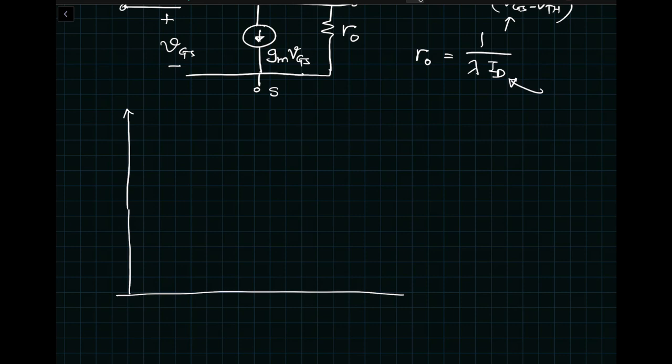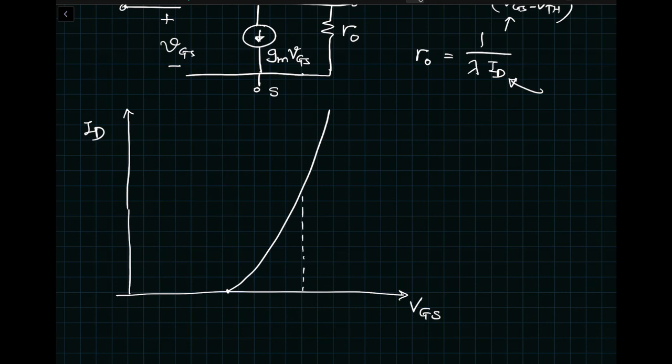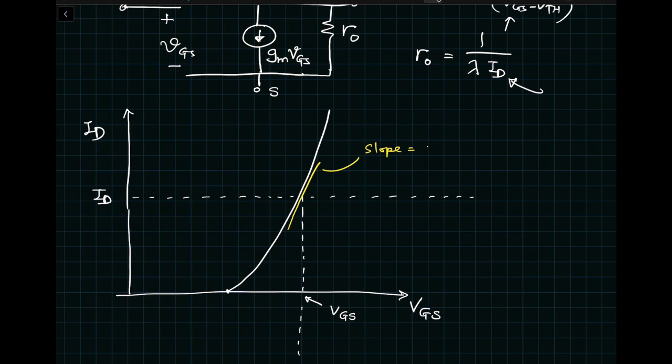Plotting large signal drain current on the y-axis and large signal VGS on the x-axis: when VGS equals VTH, the transistor just begins to conduct with zero current. Then it follows a square-law relationship. At our DC operating point VGS and DC drain current ID, drawing a tangent gives a slope equal to Gm, the transconductance.